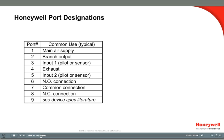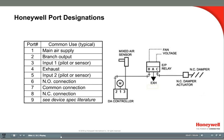The ports on pneumatic devices are labeled following this convention. The main air is always labeled with a 1 and the branch line is labeled with a 2. Ports labeled 3 and 5 are either inputs or pilot signal outputs. Here you can see how port 3 signals the damper actuator to fully open a damper when the fan is running. Other nomenclature commonly seen is M for main air and B for branch line air. These designations appear on the drawings in the following slides and in the installation instructions.